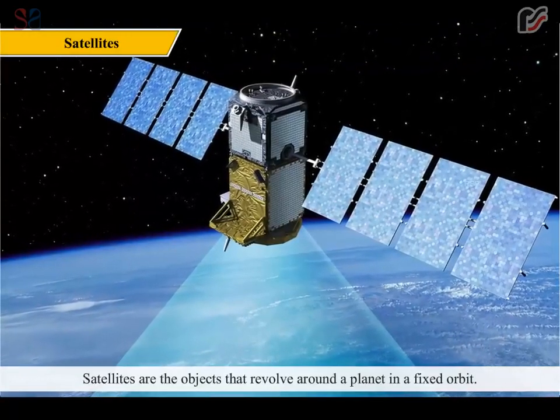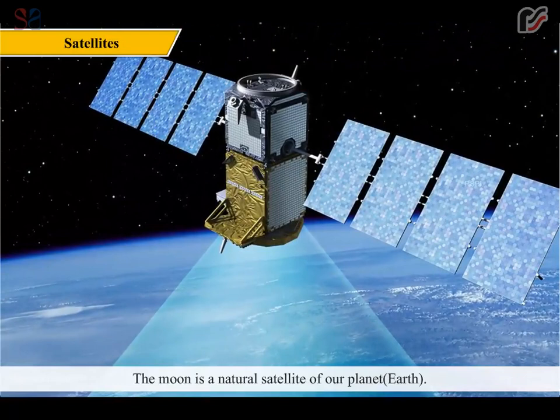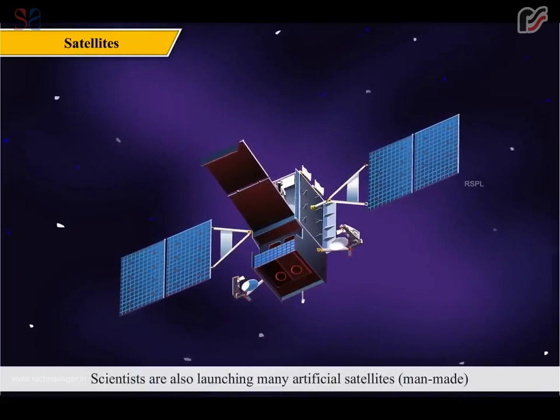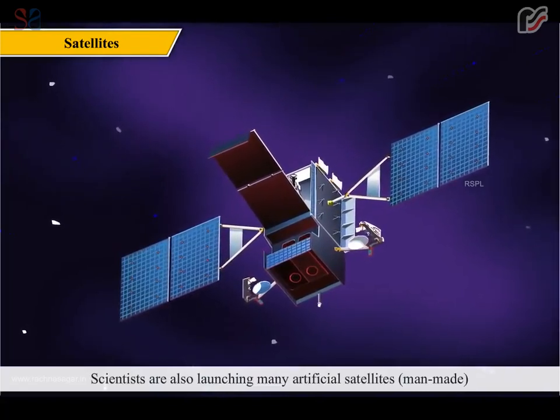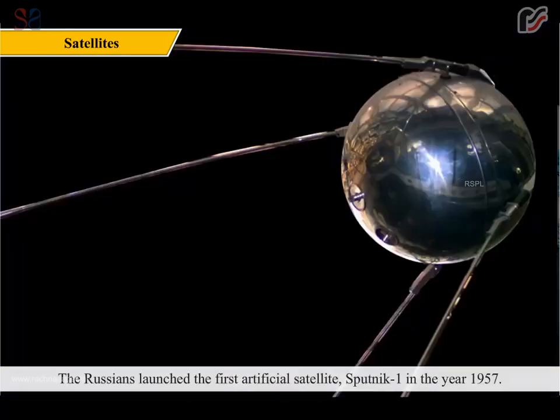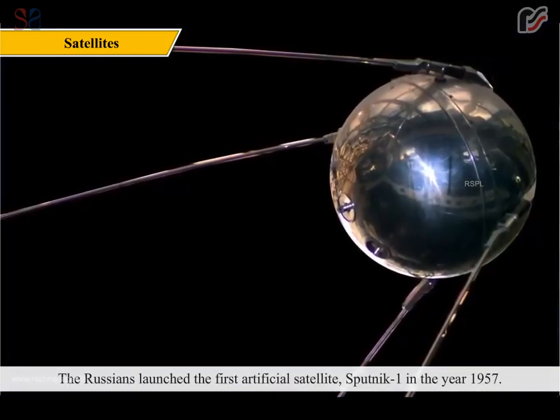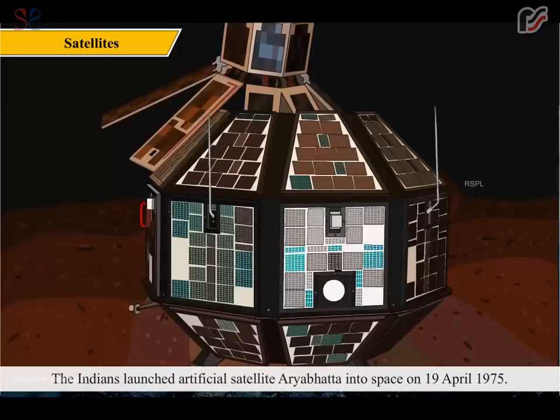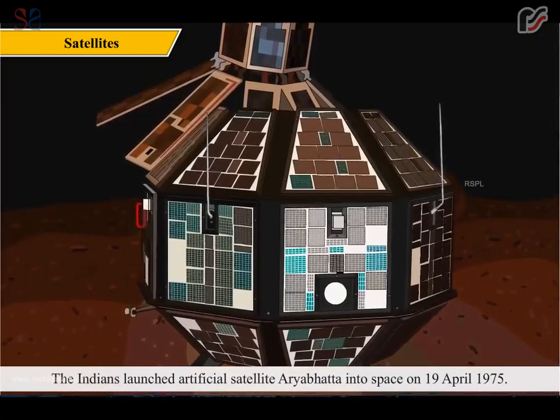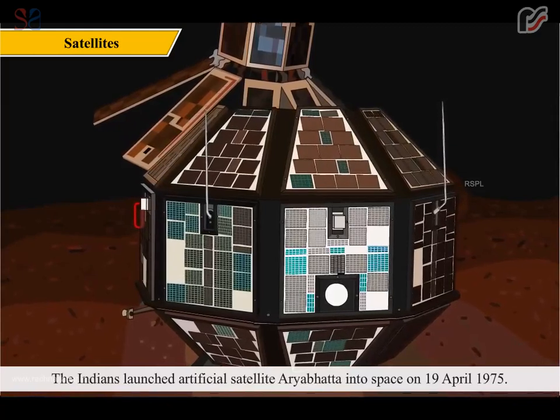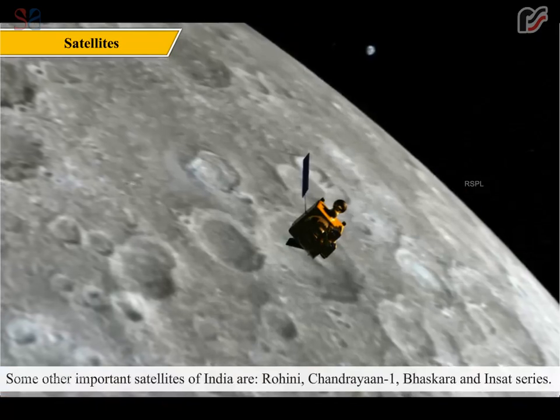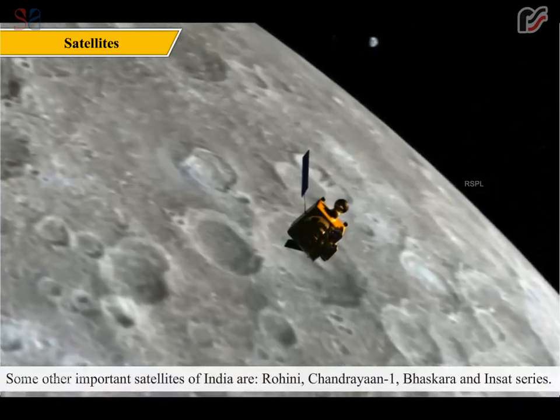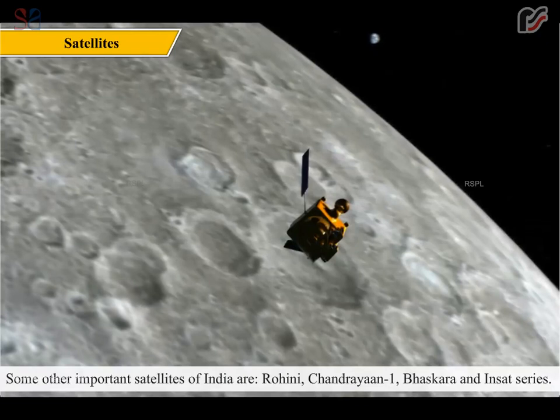Satellites are objects that revolve around the planet in a fixed orbit. The Moon is a natural satellite of our planet Earth. Scientists are also launching many artificial satellites, man-made, to get a lot of information through them. The Russians launched the first artificial satellite, Sputnik 1, in the year 1957. Since then, many countries have launched their satellites into space. The Indians launched artificial satellite Aryabhatta into space on 19 April 1975. Some other important satellites of India are Rohini, Chandrayaan I, Bhaskara, and Insat series.